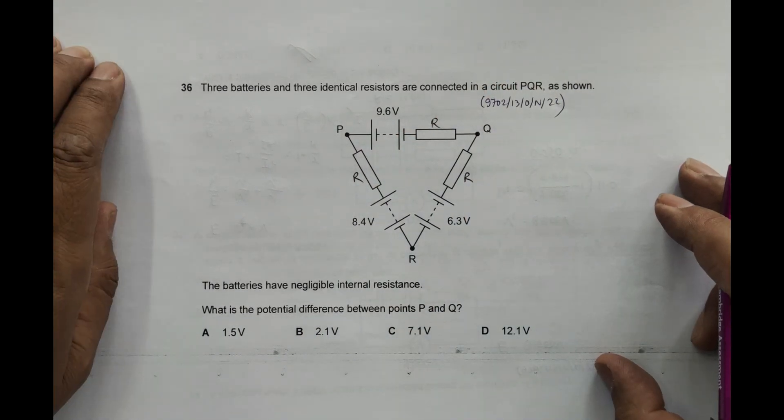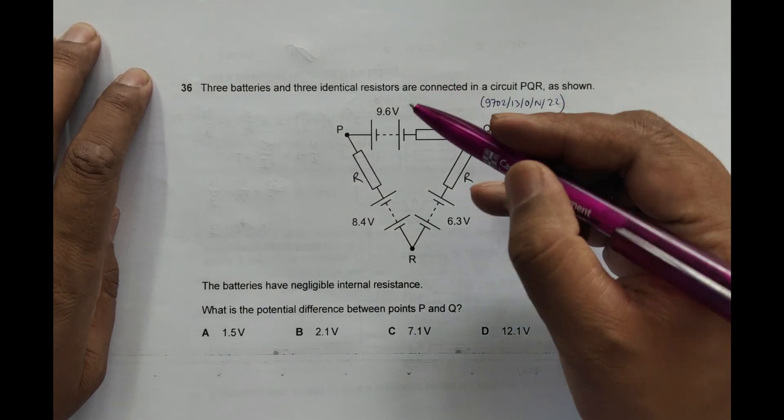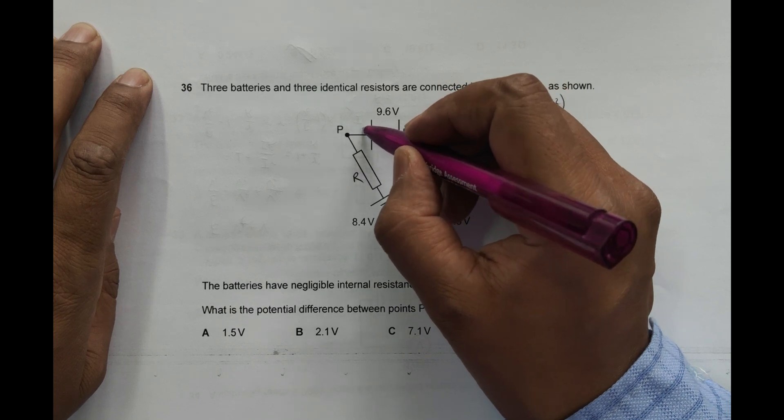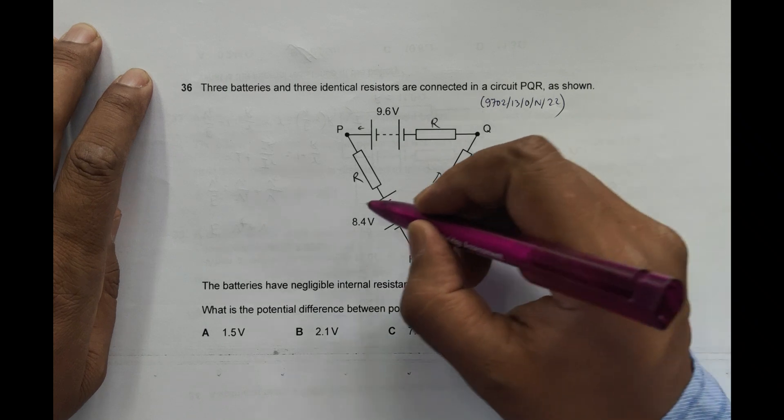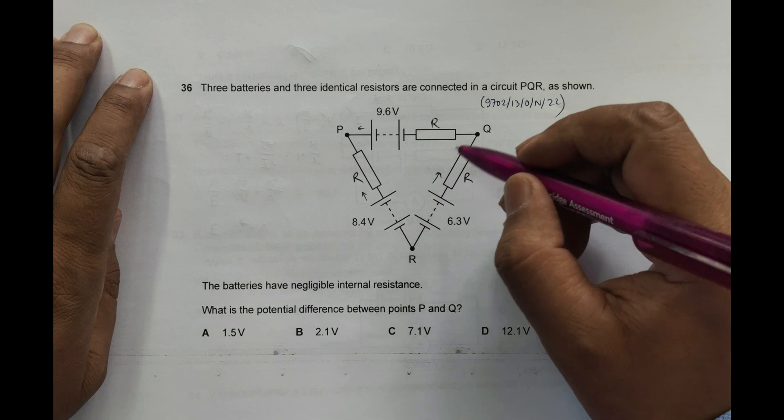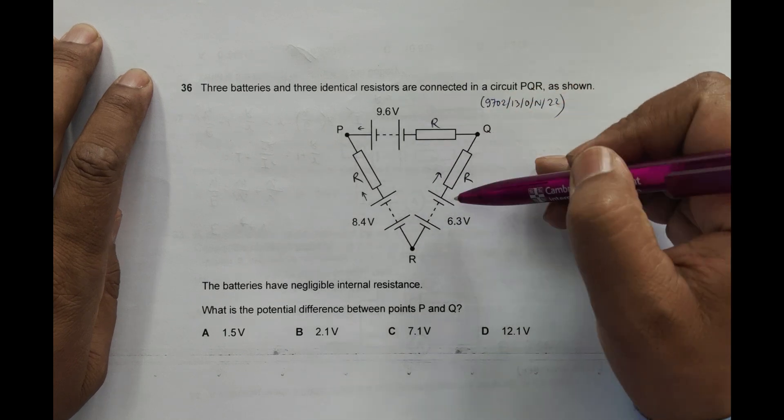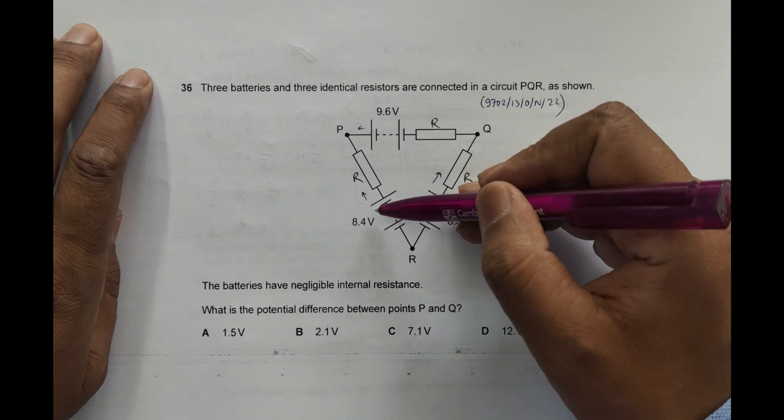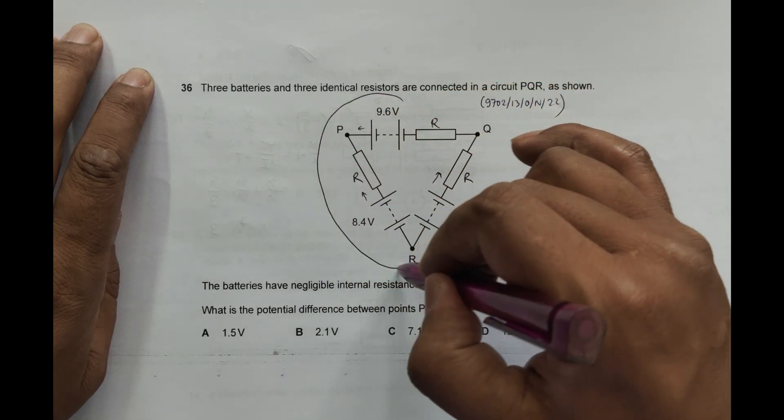In order to do that, let's first find the total current in the circuit. This source of EMF will try to force current in this direction, this will force current this direction, and this will force current in this direction. But if I add this and this, the sum will be definitely more than this, so the overall current will be in this direction.